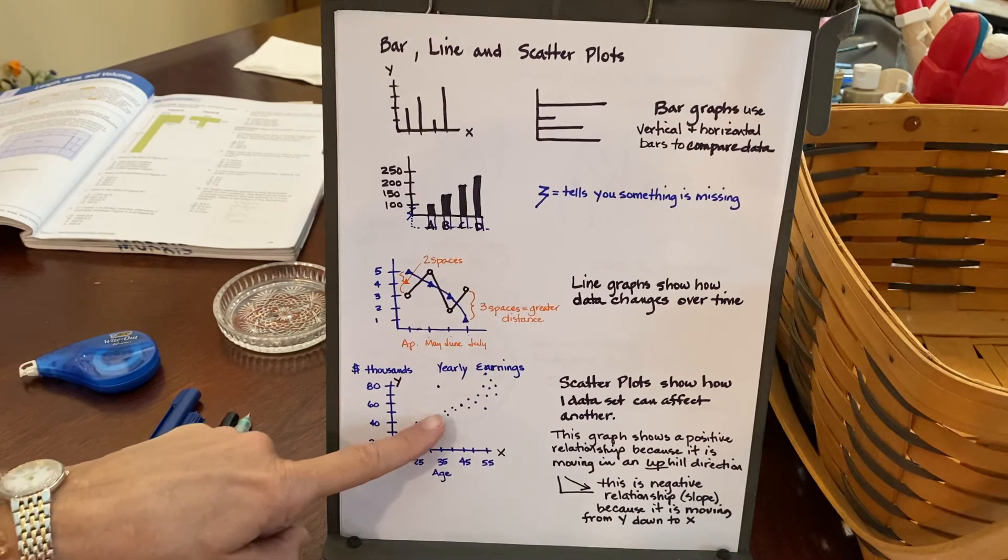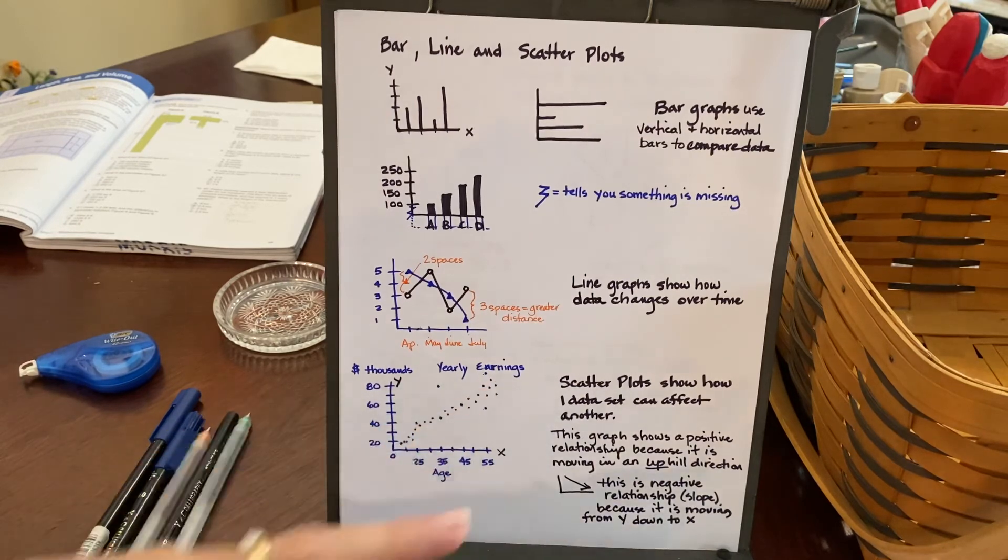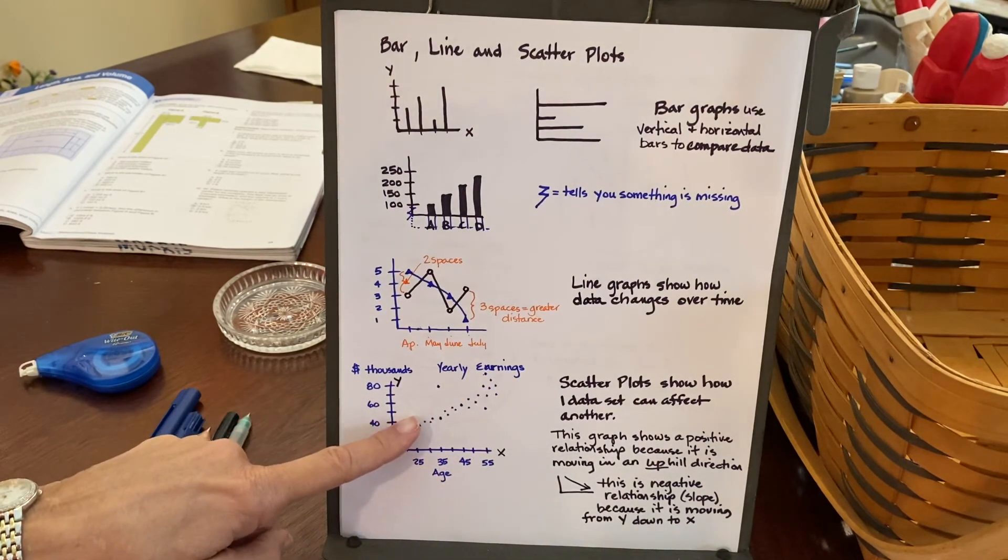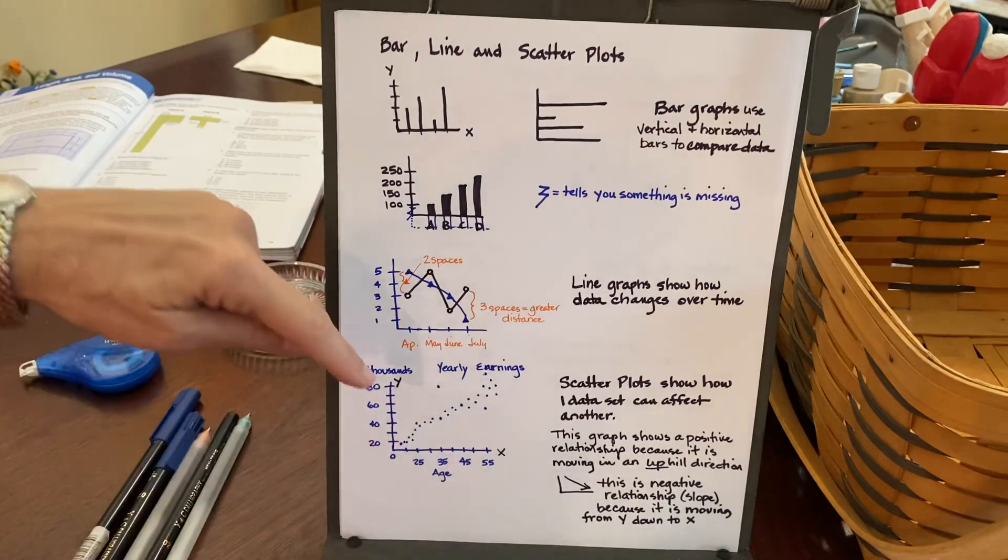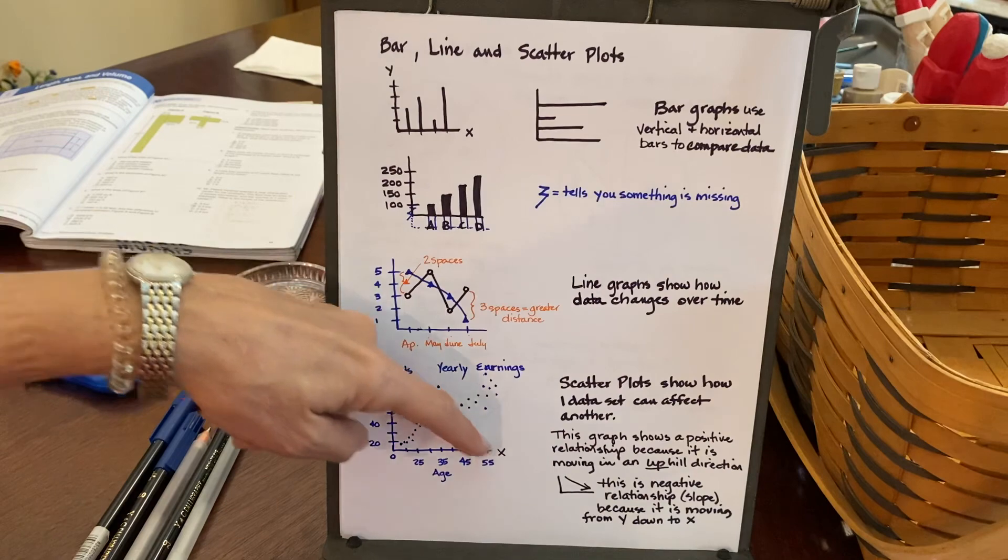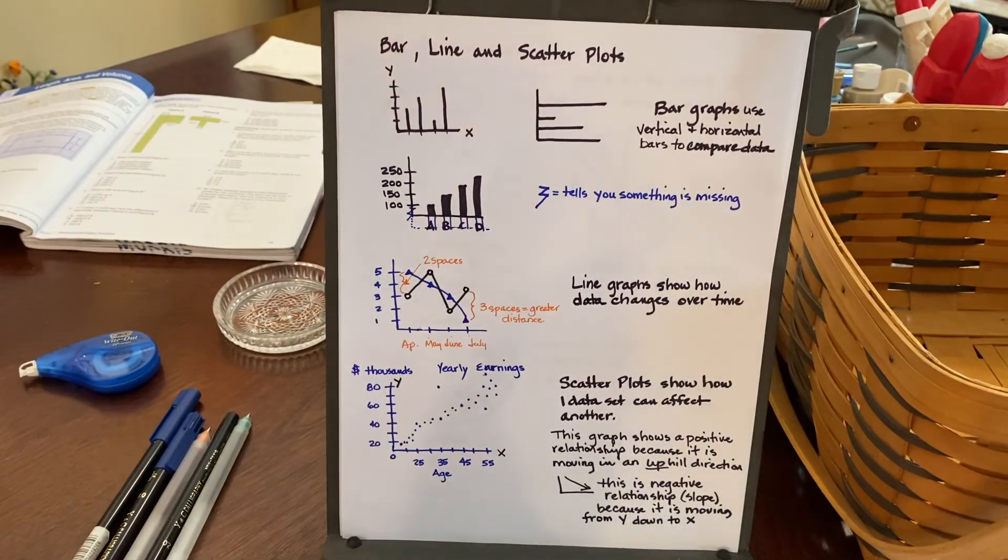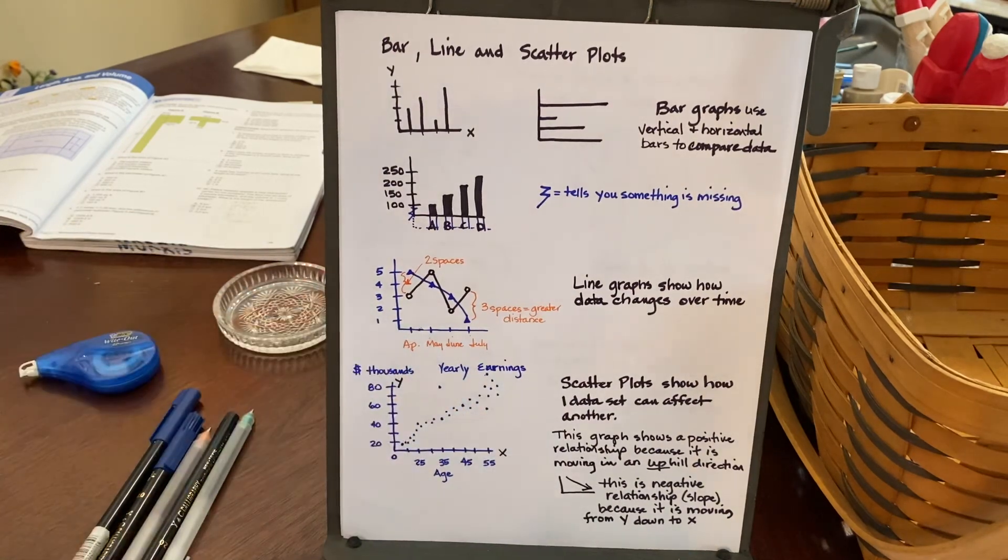Now, this is what we call a positive relationship, a positive growth, even a positive slope. That's something we'll talk about later on when we're actually dealing with straight lines. But this is a positive relationship because it is going uphill. If we had a graph that the high data was up here on the y-axis, it starts up here and then goes down. We're going downhill. That would be a negative correlation or a negative relationship. So keep that in mind. Going uphill is positive. Going downhill is negative.